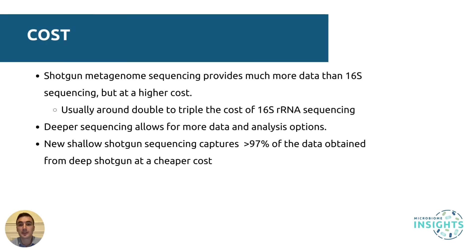The first factor to consider is cost. Although shotgun metagenomic sequencing provides much more data than 16S rRNA gene sequencing, you will have to pay for that extra data. Shotgun metagenomic sequencing is usually at least double to triple the cost of 16S sequencing, although costs are falling continuously. In order to work around this data versus cost dilemma, some researchers conduct 16S sequencing on all of their samples in addition to shotgun metagenomic sequencing on a small subset of their samples in their study.